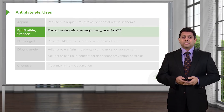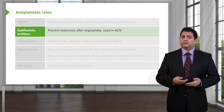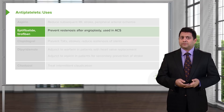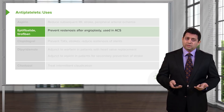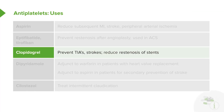The GP2B3A direct inhibitors also prevent restenosis after angioplasty and are used in acute coronary syndrome. Clopidogrel, remember, is an irreversible inhibitor — it prevents TIAs or mini strokes, prevents strokes, and reduces restenosis of stents. We often use clopidogrel or prasugrel for about a year after placing a drug-eluting stent.